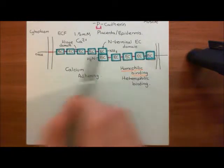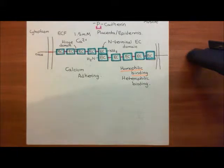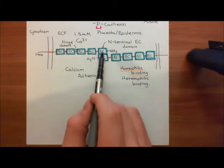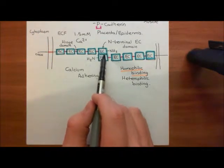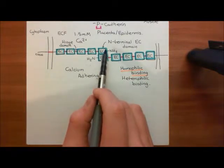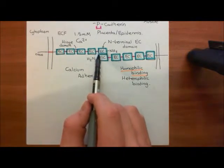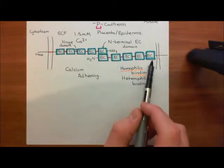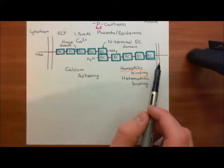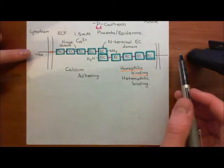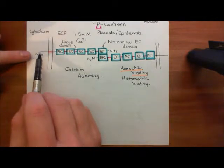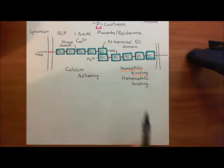The way that these classical cadherins are going to join two cells together is for a direct cell-cell interaction, and specifically it's through this N-terminal extracellular cadherin domain. These two will link together, and that's how we get this direct link between the two cells. Now we're going to talk about how the cytoplasmic tail here is going to link up to the cytoskeleton of the cell.